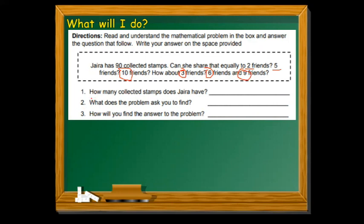The first question: how many collected stamps does Jira have? Based on the problem, Jira has 90 collected stamps. What does the problem ask you to find? Can she share them equally to 2, 5, 10, 3, 6, or 9 friends equally? And how will you find the answer to the problem? This is where the divisibility rules of 2, 3, 5, 6, 9, and 10 come in.